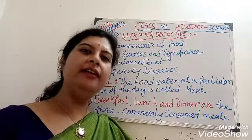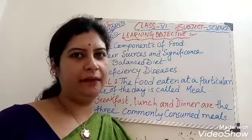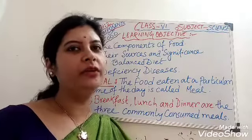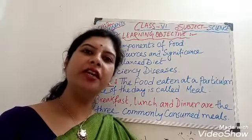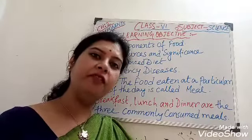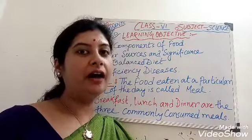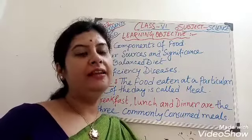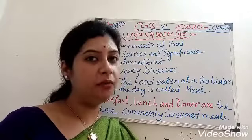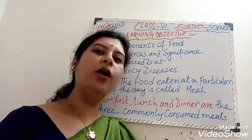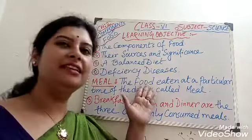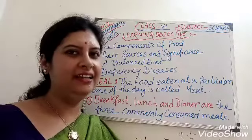Before starting this chapter, we already learned in our first chapter that we consume different types of food items. Now the question is: why do we take these different types of food items? If our meal had a single kind of food, what problems would arise? To find out all these answers, we deal with this second chapter. Let's start.